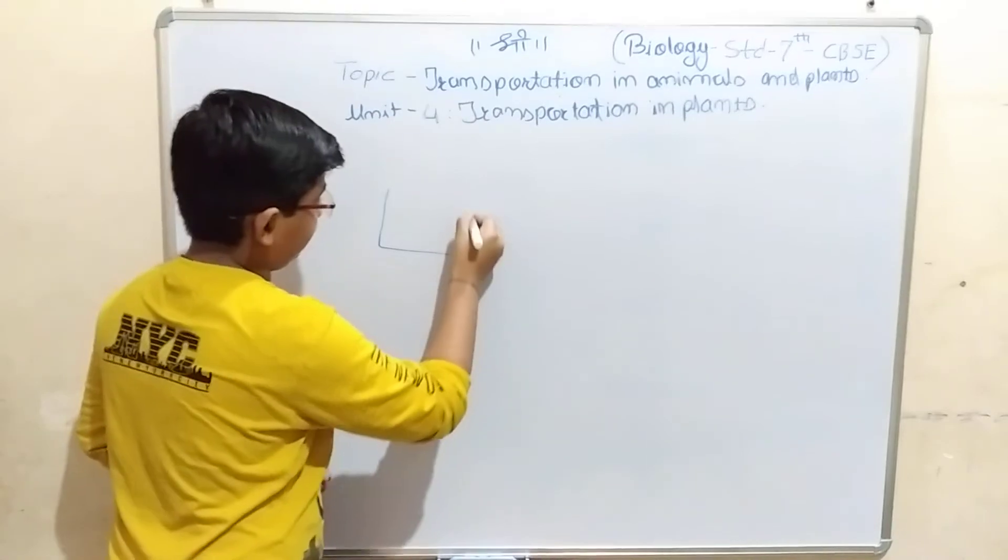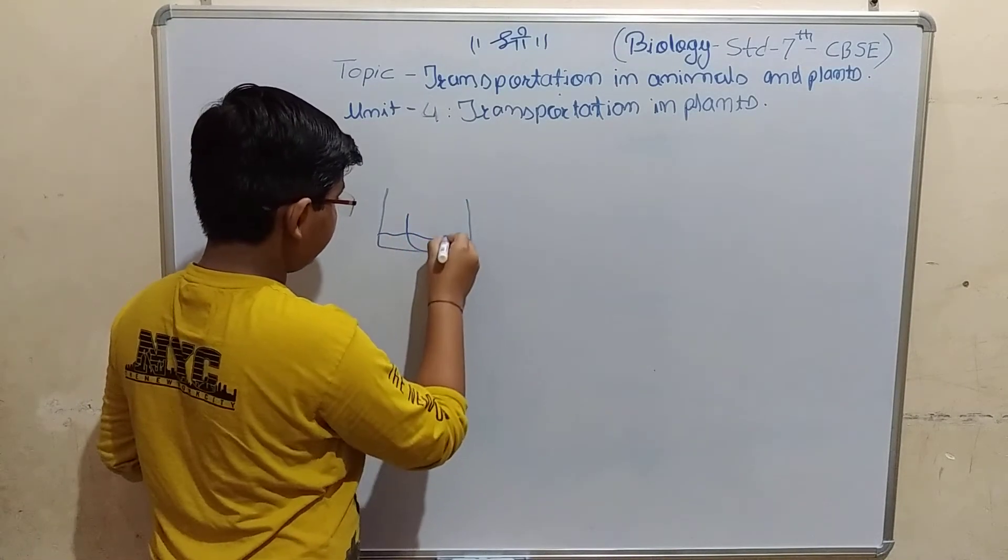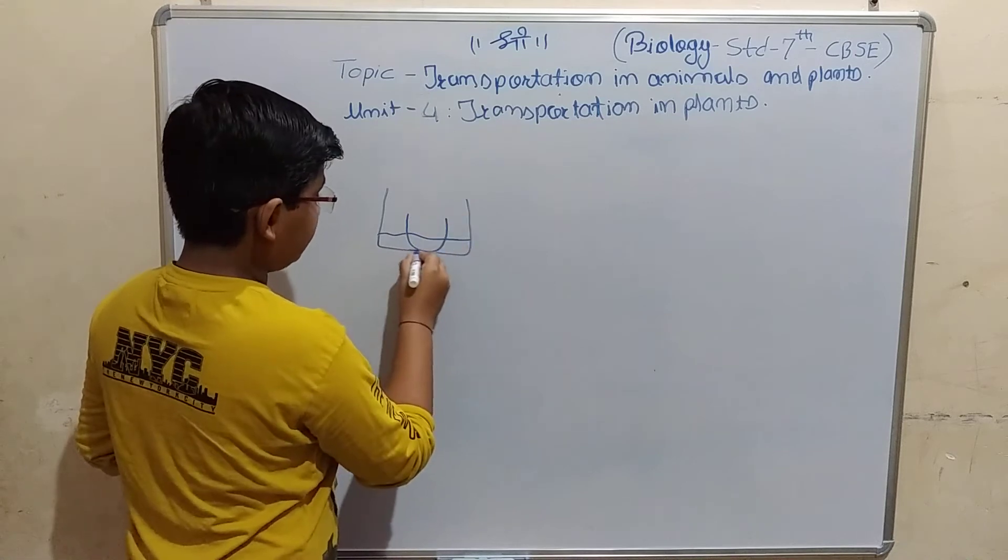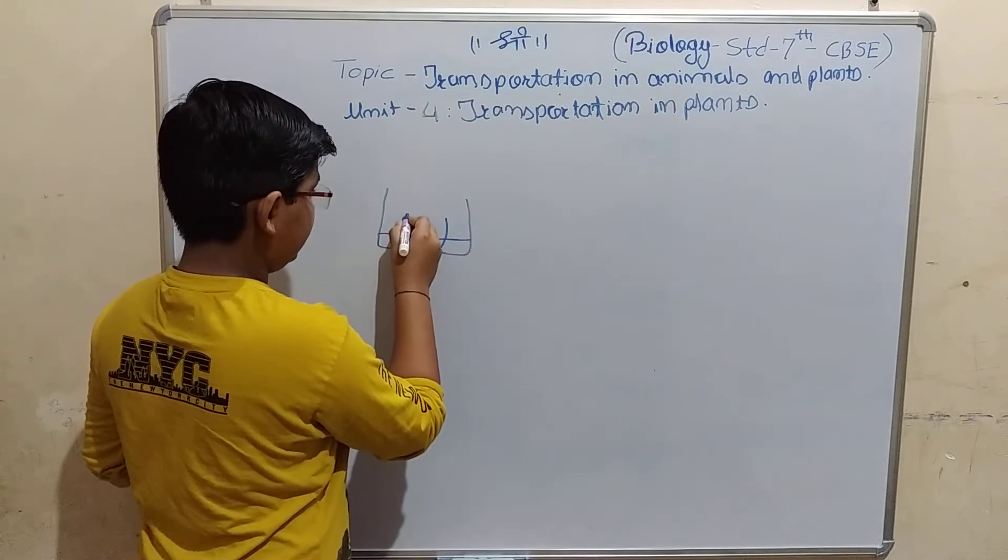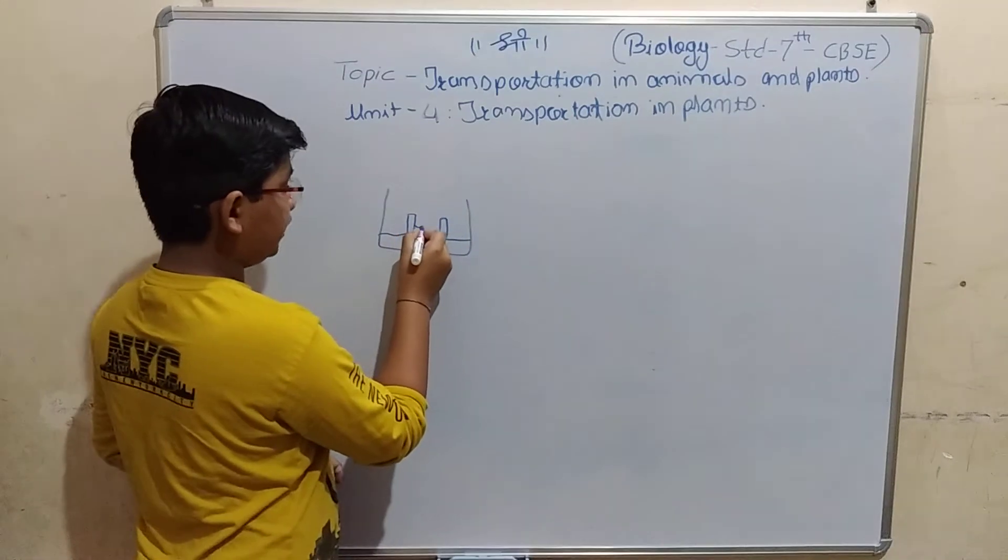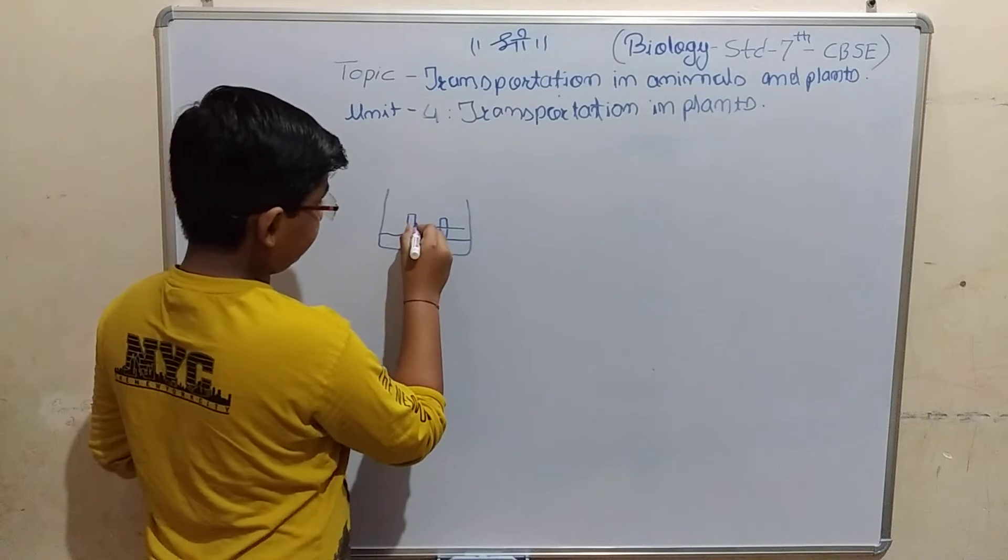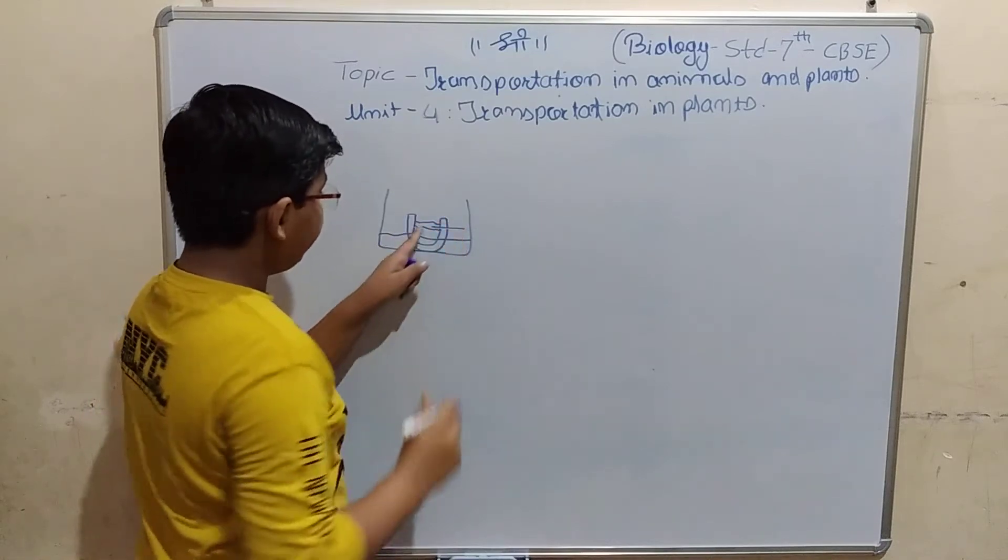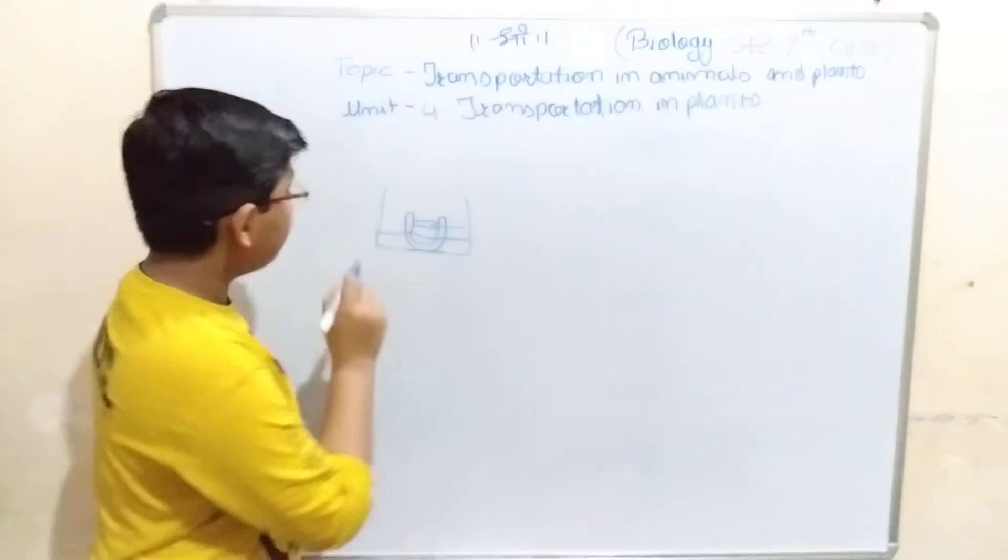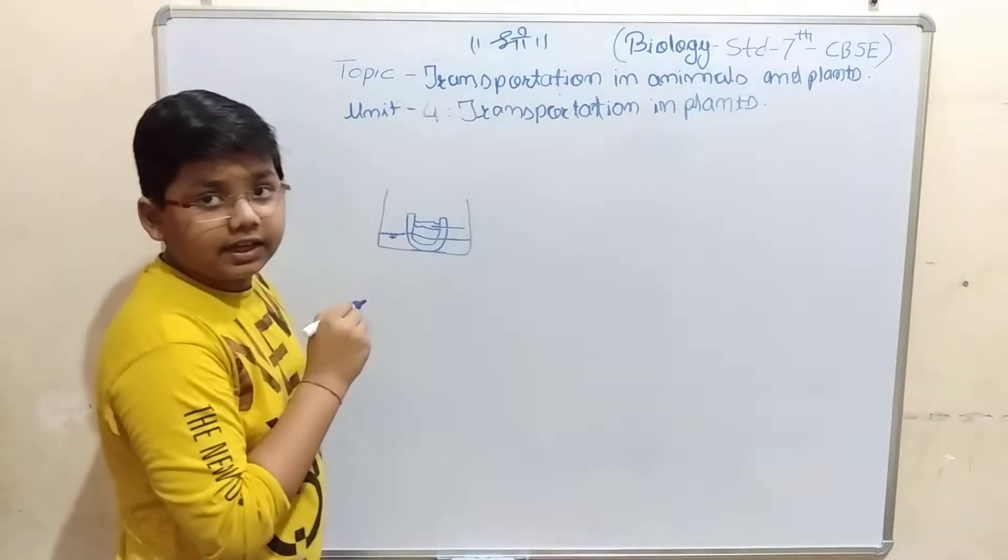In reality, what happens is here is a beaker containing water. We had put a potato like this and made the base flat. We made a hollow cavity like this, filled it with sugar solution and marked the level over here. After some time the water level has increased. That is correct, because the water level in the beaker gets lower.